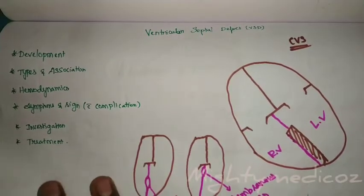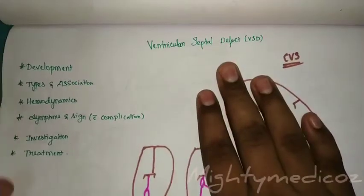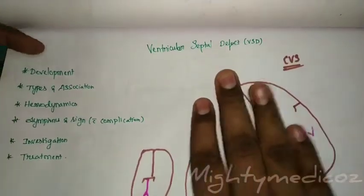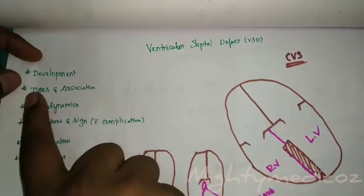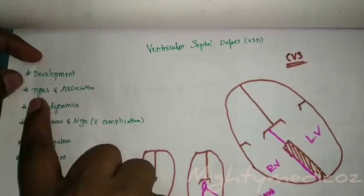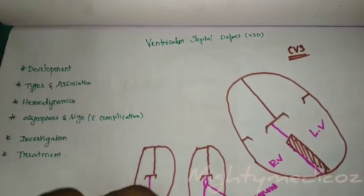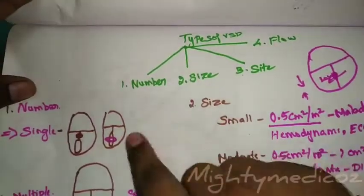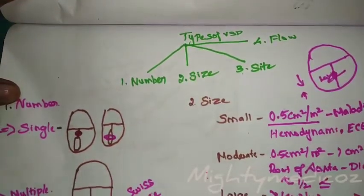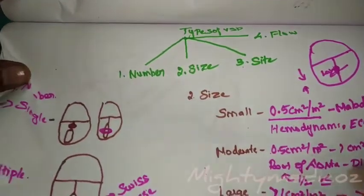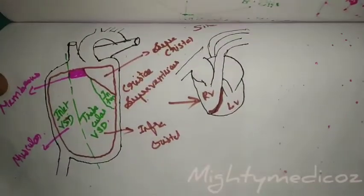Welcome to Mighty Medicos. Today we are covering ventricular septal defect — the development of ventricular septum and what are the types of ventricular septal defect. Types are based on number, size, site and flow. That is why we have classifications. Now we are going to cover association disorders.